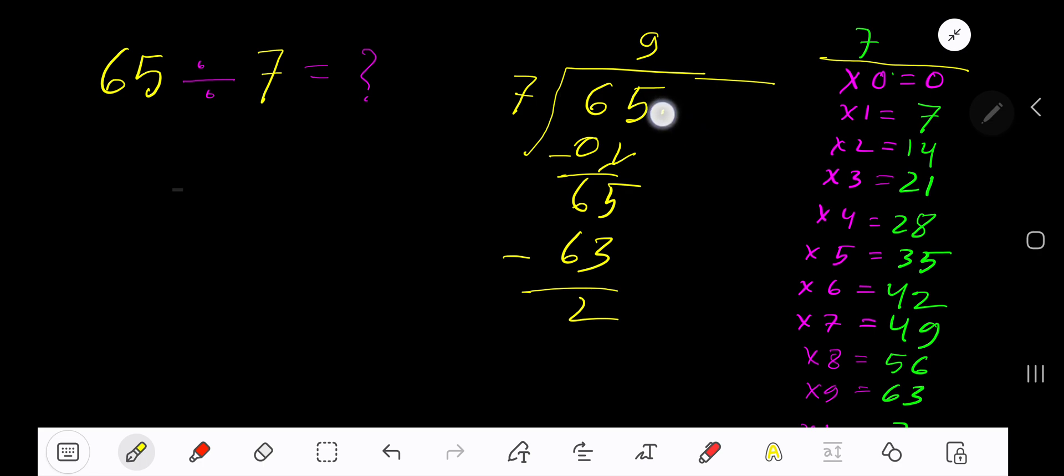If you want to write your answer in decimal form, then take a decimal and add zeros. Bring down the first zero. Before this there is a decimal. Decimal must come to the quotient directly. 7 goes into 20 how many times?